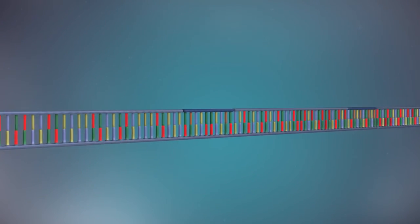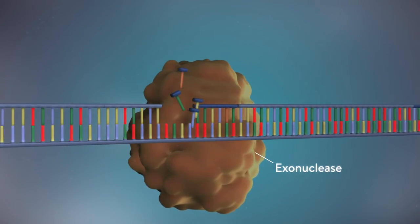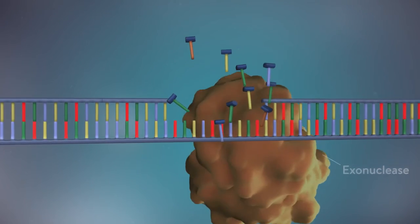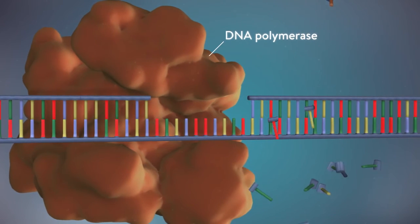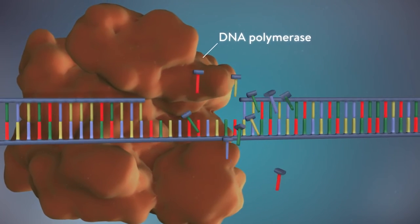Once the new DNA has been made, the enzyme exonuclease removes all the RNA primers from both strands of DNA. Another DNA polymerase enzyme then fills in the gaps that are left behind with DNA.